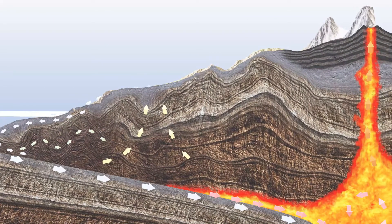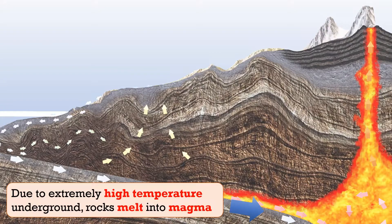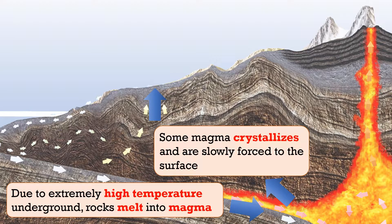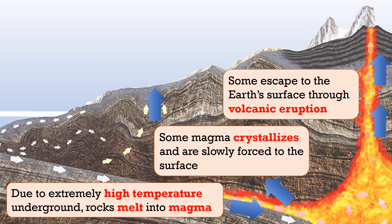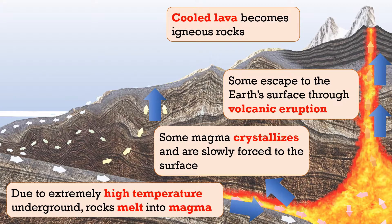While all of these processes are happening, more rocks will be pushed underground due to sheer pressure. When they reach near to the mantle, they will suffer even higher temperature underground. At that time, the rocks will actually melt into magma. Due to the high heat of the magma, some of them will be pushed towards the ground, and they will cool and crystallise and slowly force to the surface, which forms igneous rocks. On the other hand, some of the magma will find a hole and escape through the earth's surface through the volcanic eruption process. When lava shoots off from the volcano, it will cool and finally become igneous rocks once again.